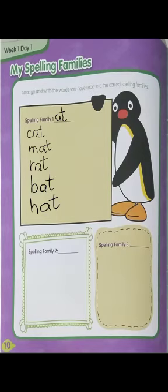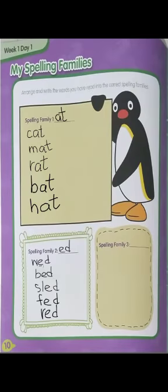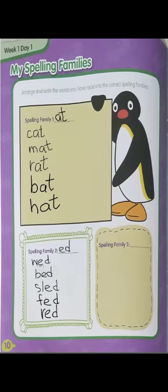The second word family is ED. Remember the ED words like wed, sled, shed, red, fed. We are going to write the ED words right now. The words I have chosen are: wet, sled, fed, red, bat. These were the five words of the ED family.